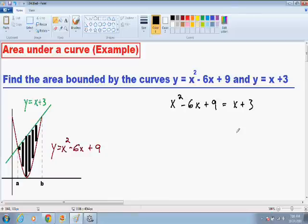And if you solve this equation for x, we find our two x values where these two curves intersect. So the first thing I'm going to do to solve this equation is to subtract x and to subtract 3 from both sides and make it all equal to 0.